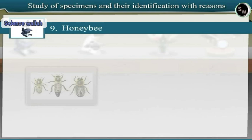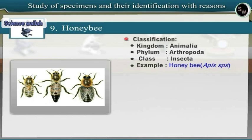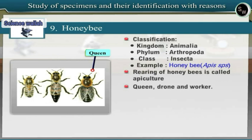Specimen 9: Honeybee. Observe the preserved specimens of honeybees which live together in a colony. Honeybees belong to class Insecta of Phylum Arthropoda in Kingdom Animalia. They belong to genus Apis and there are different species of this genus. Rearing of honeybees is called apiculture. The colony of honeybees consists of three types of individuals: queen, drone and worker.